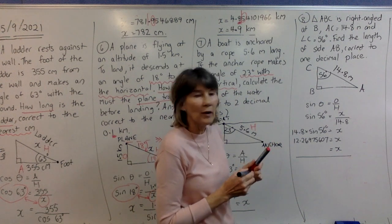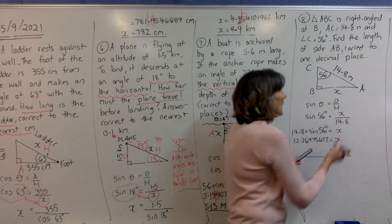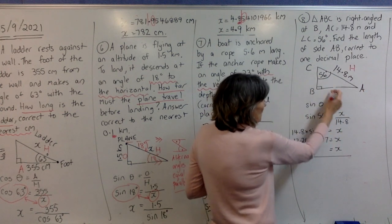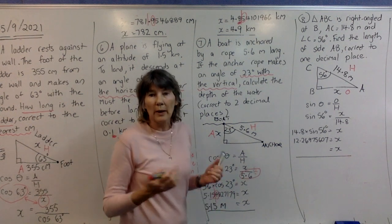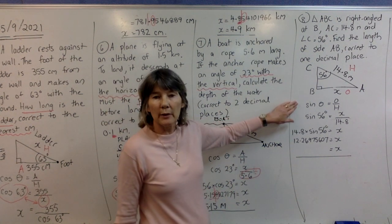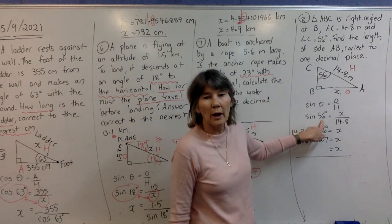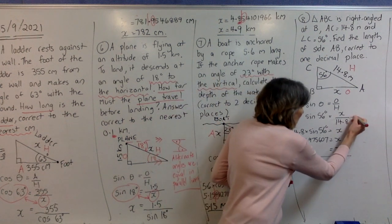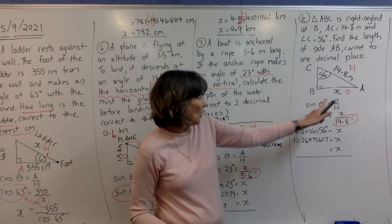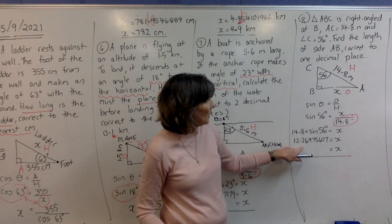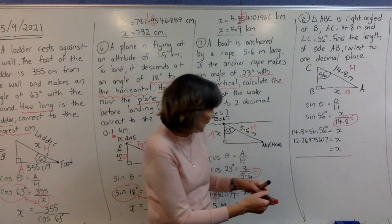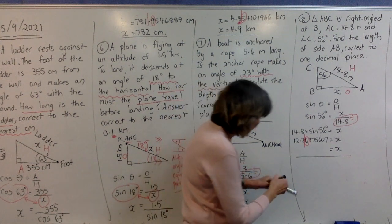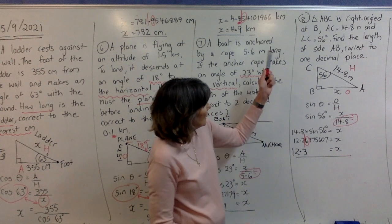We're finding the length of side AB — label it x. AC (14.8 m) is the hypotenuse; AB is opposite to angle C. Using opposite and hypotenuse, we use sine: sin θ = O/H, so sin 56° = x/14.8. Rearrange: x = 14.8 × sin 56°. Calculate and round to one decimal place — the next digit is five or more, so round up by one to get 12.3 meters.